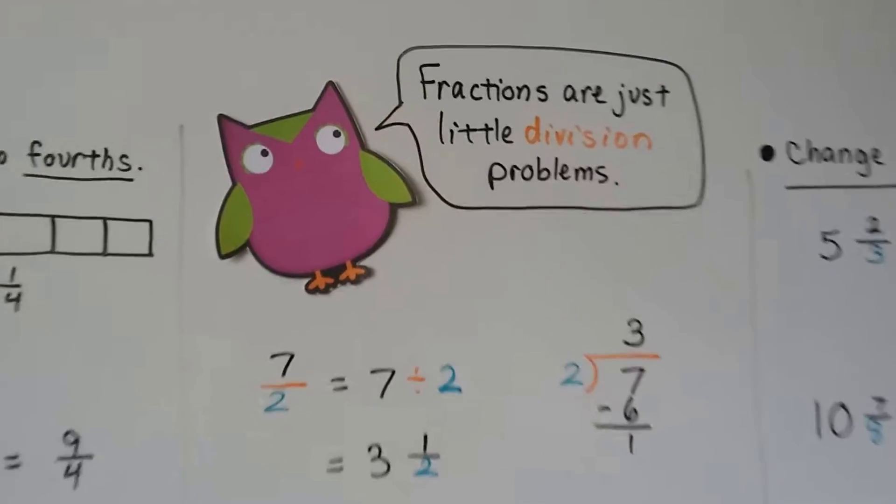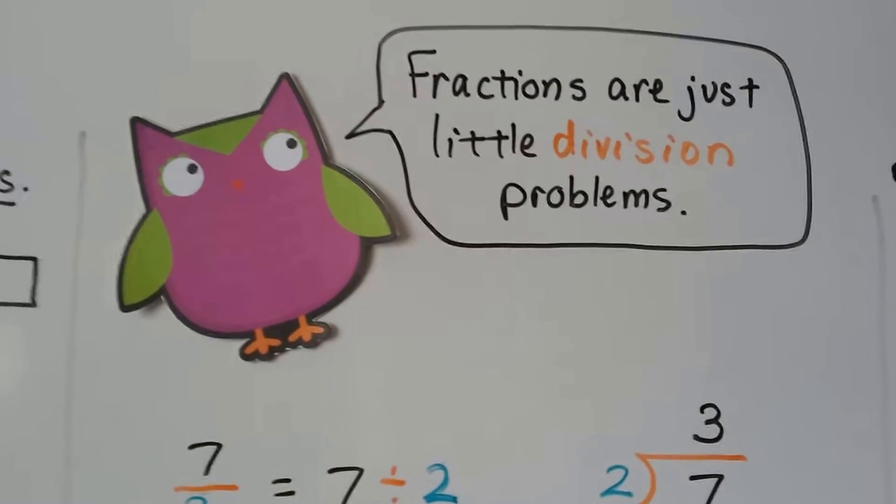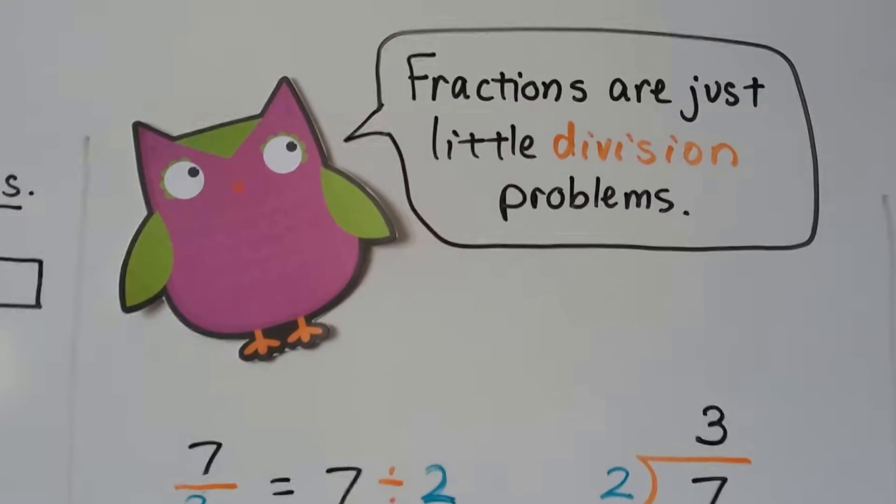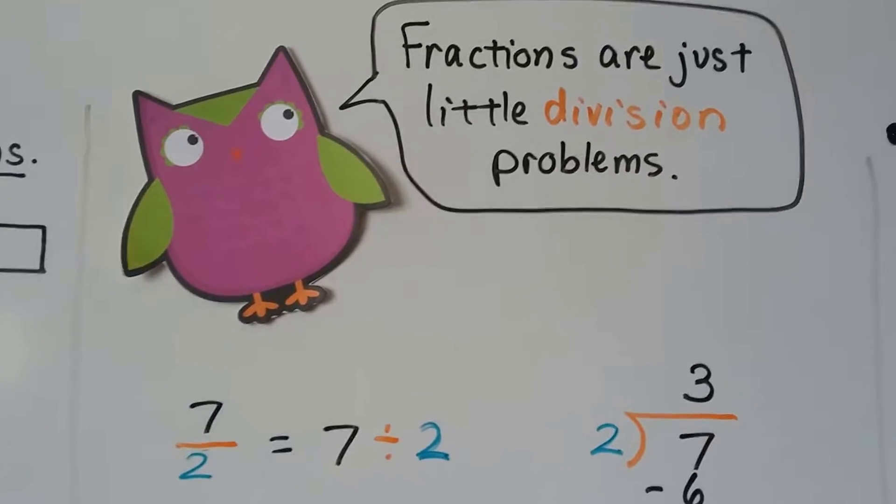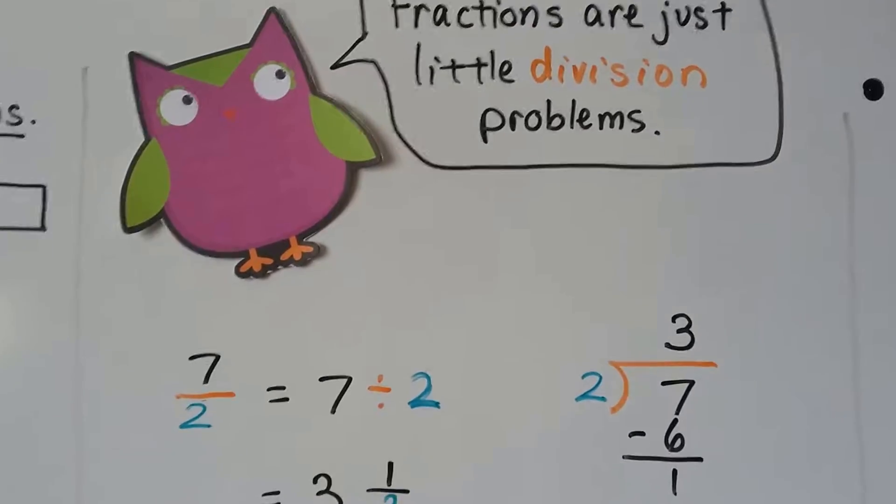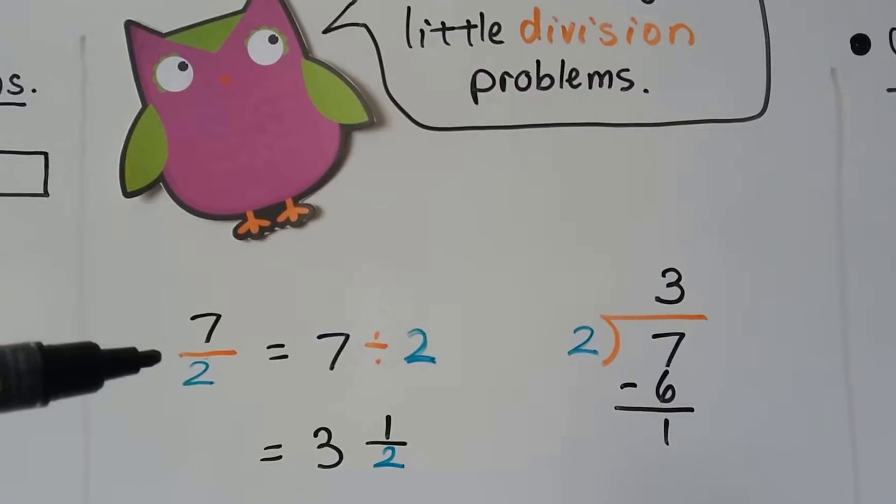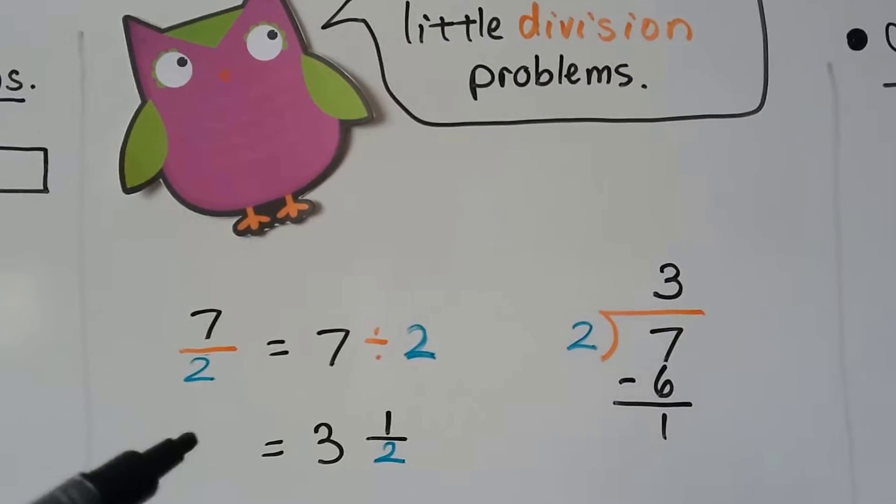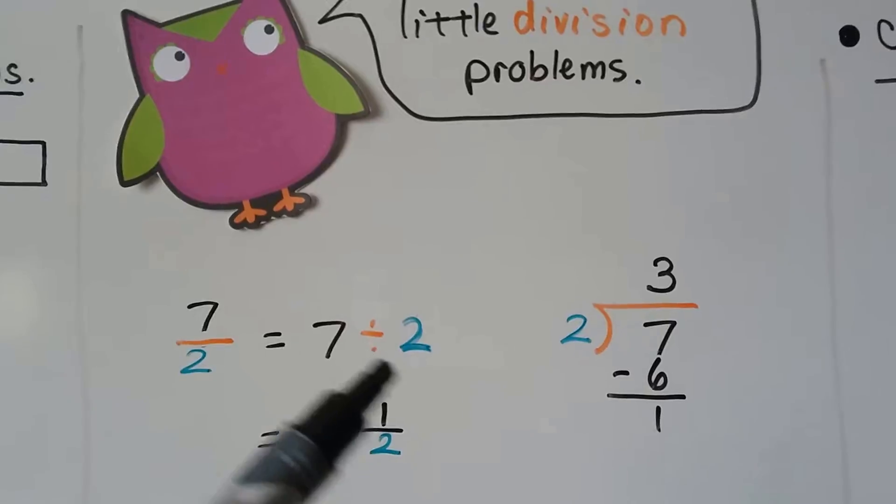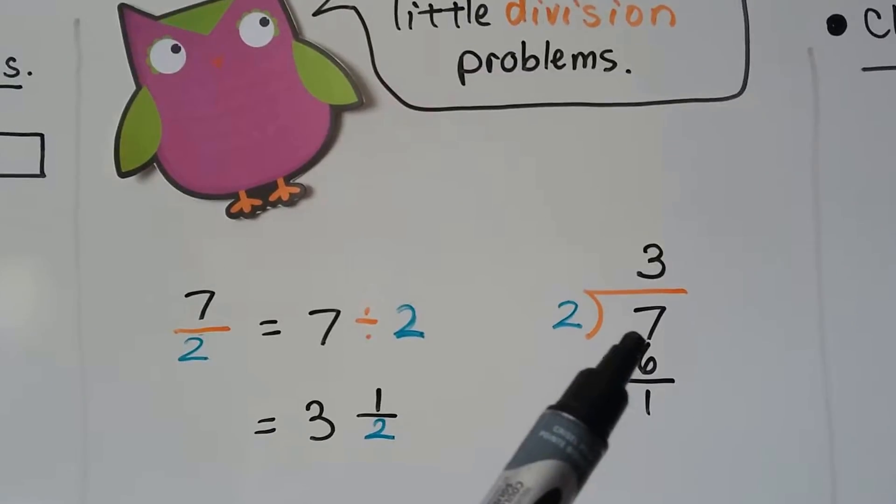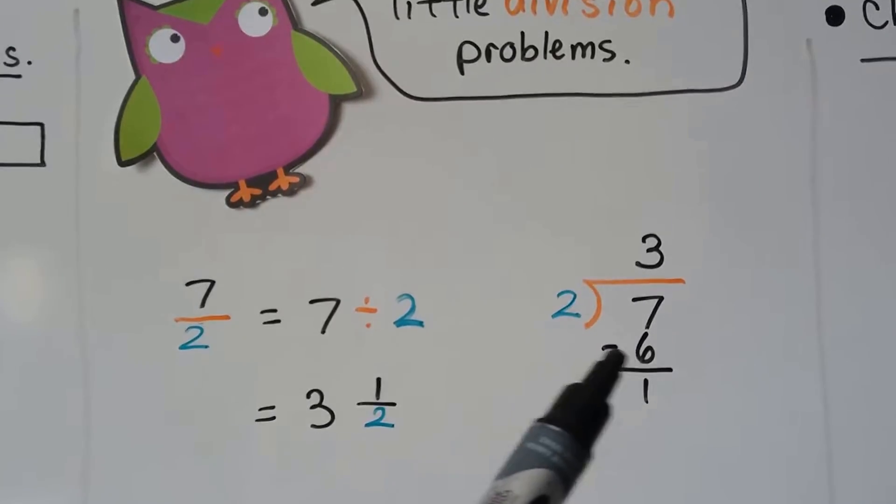Now, this little owl said this before, fractions are just little division problems, and I say it all the time because that's going to help you in algebra. Fractions are little division problems. We look at this fraction bar as a division symbol. 7 halves is equal to 7 divided by 2. How many times can 2 fit into 7? 3. 2 times 3 is 6.